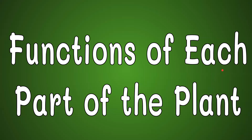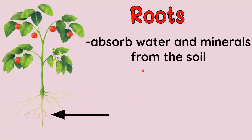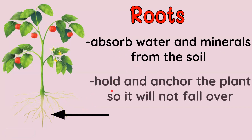Now let's go to the different functions of each part of the plant. What does each part do to the plant? Let's have first the roots. These are the roots of the tomato. The function of the roots is to absorb water and minerals from the soil. The roots also hold and anchor the plant so it will not fall over.